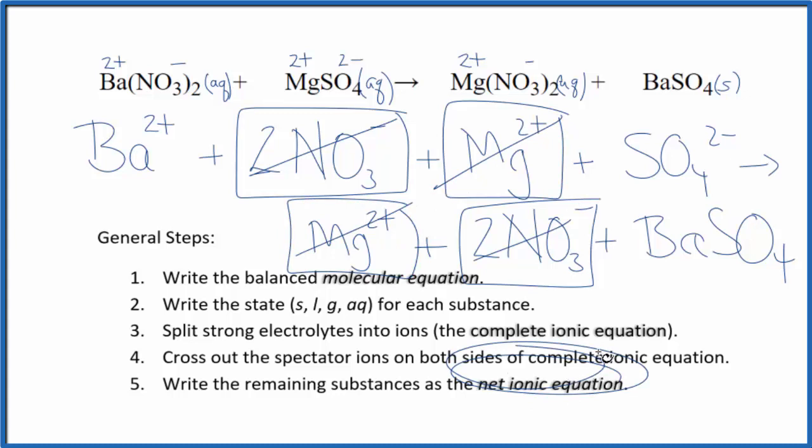What's left is our net ionic equation for Ba(NO3)2 plus MgSO4. I'll clean this up and write the states in. We'll have our net ionic equation.